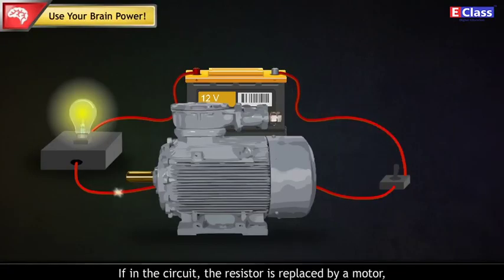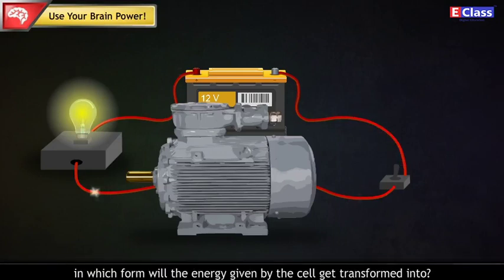Use your brain power. If in the circuit, the resistor is replaced by a motor, in which form will the energy given by the cell get transformed into?